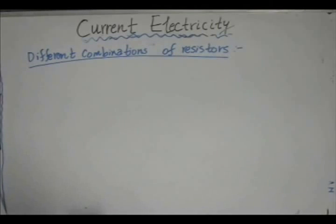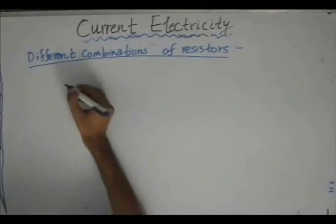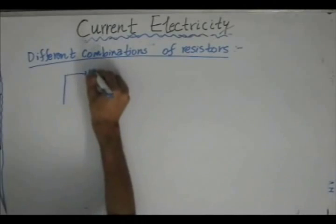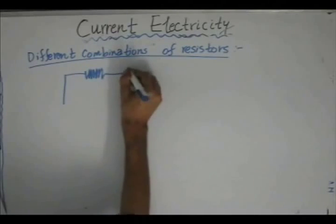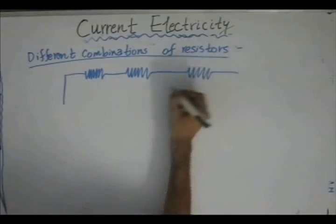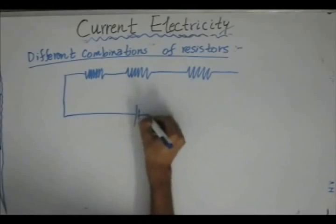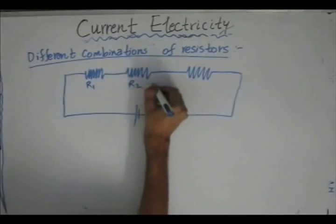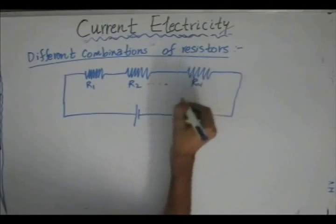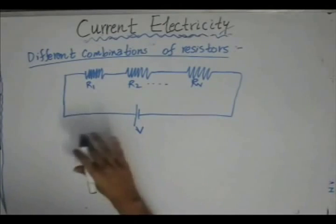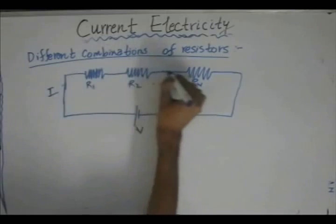Now we look at different combinations of resistors, starting with series connections. Suppose we consider an electrical circuit containing n resistors connected in series. A series connection implies that if there are n resistances R1, R2 to Rn connected across an EMF — across a cell — such that the current through each of the resistors is the same.